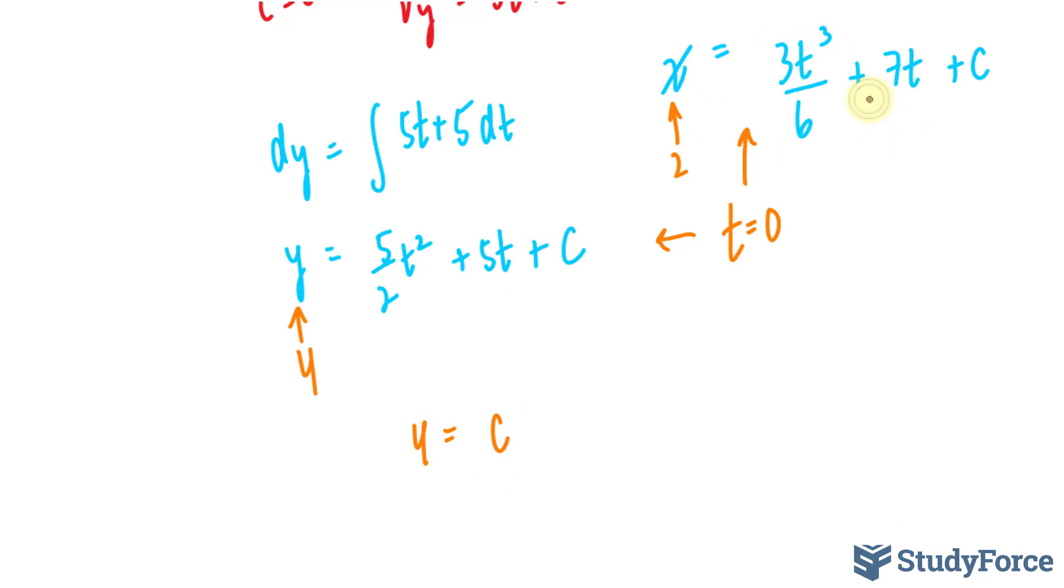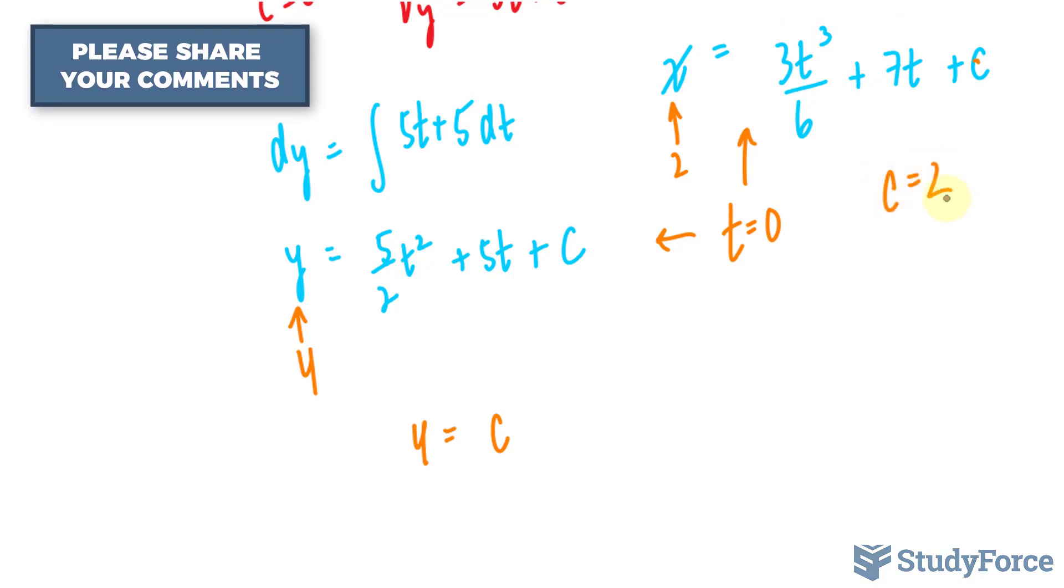And over here, if I substitute 0 into here and into here, I end up with c equals 2, giving me two displacement equations defined as such.